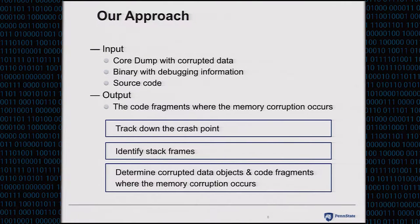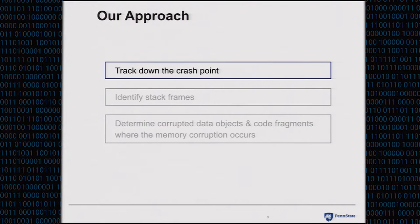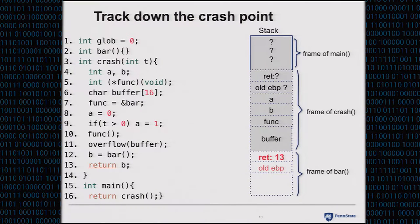To achieve our goal, we have to do three things. First, when the crash point is missing, we need to track it down. When the crash point is missing, it is highly possible that the target of an indirect jump has been corrupted. When the indirect jump was executed, the program crashed. So in these cases, to locate the crash point, we need to pinpoint that indirect jump.